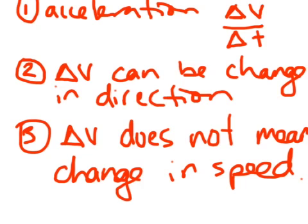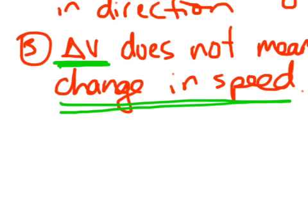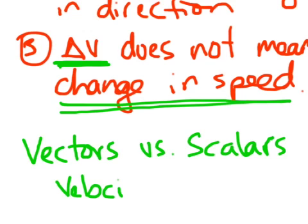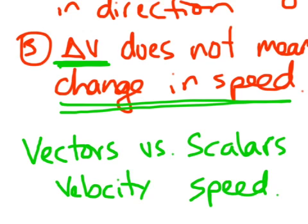You might be thinking — what is he on? Here's the key to this. A change in velocity does not automatically mean a change in speed. Let's elaborate. I'll write this in green because this is the key to the whole thing: vectors are different from scalars. Vectors, like velocity, are not the same as scalars like speed. To the layman they're both the same thing, but to the physicist, they're not.